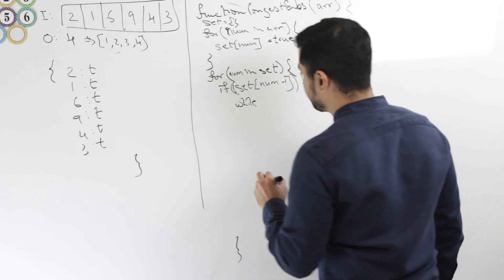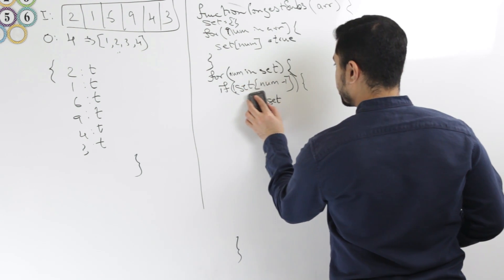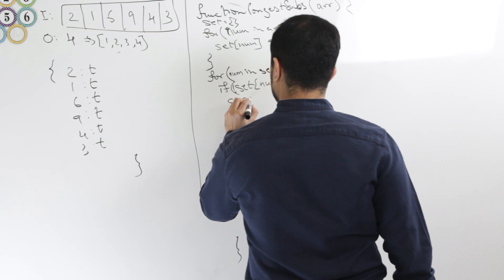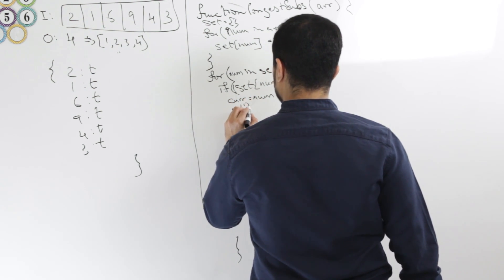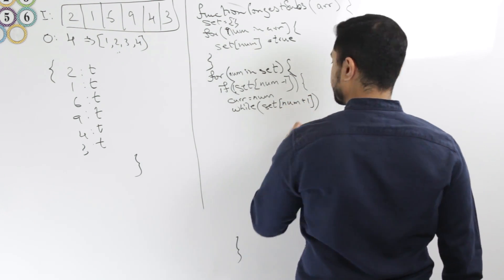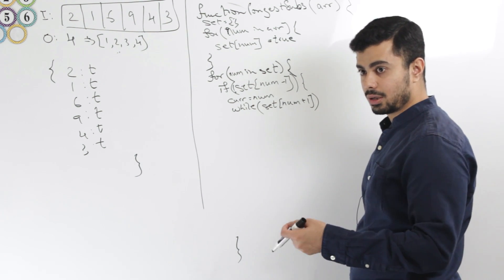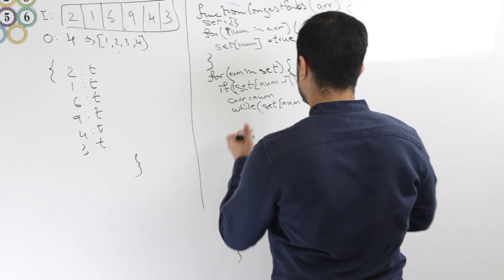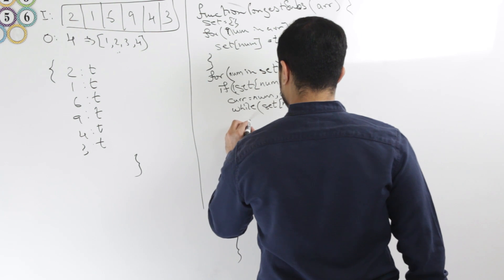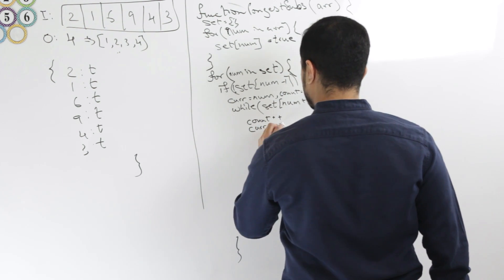So I'll say while set, let me before I go into while loop, let me just set the current number that I'm at as the number itself, right? So curr equals num, then I'll say while set num plus one. We need to do two things. We need to increment the counter and then increment current as well, right? So let me keep a log of the counter here. Curr equals num and count equals one, right? Then I'll say count plus plus and curr plus plus.